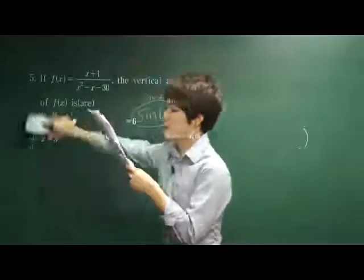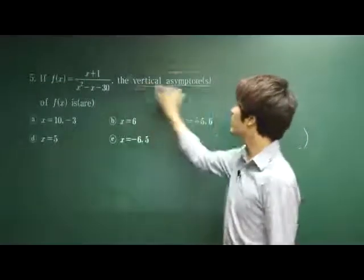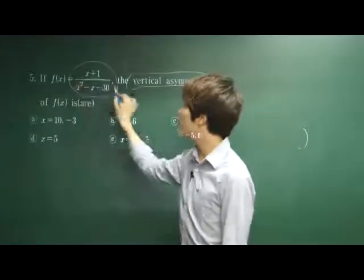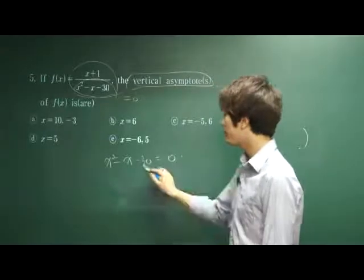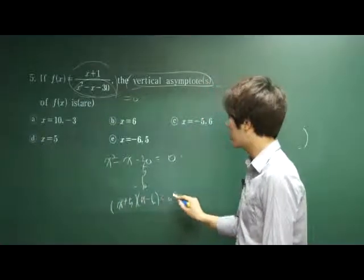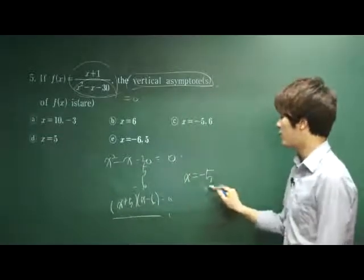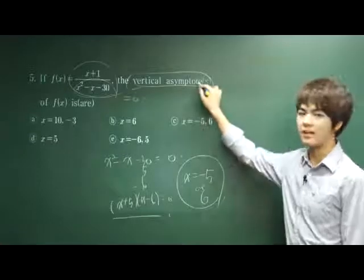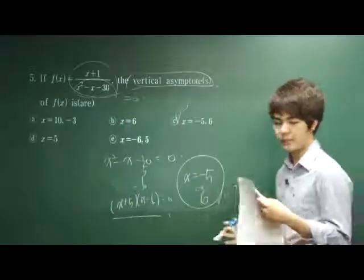Let's move on to number 5. If f(x) is equal to x plus 1 over x square minus x minus 30, the vertical asymptote of the f(x) is. When we are asked to find a vertical asymptote in this kind of function, whatever makes denominator 0 will be a vertical asymptote. So x square minus x minus 30 is equal to 0. Factor this: x plus 5 times x minus 6 is equal to 0. Therefore, the solution is x is either negative 5 or 6. When x equals negative 5 or 6, it will have the vertical asymptote because that will make the denominator 0. Therefore, c is our correct answer.